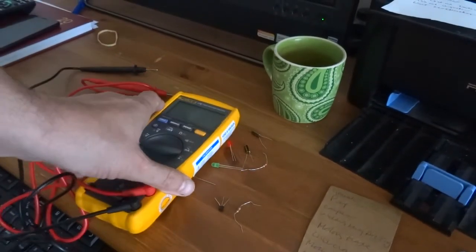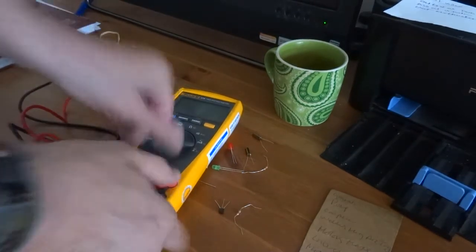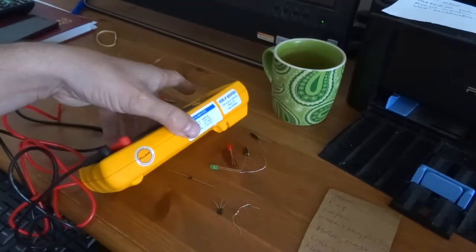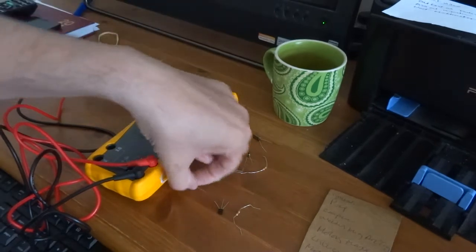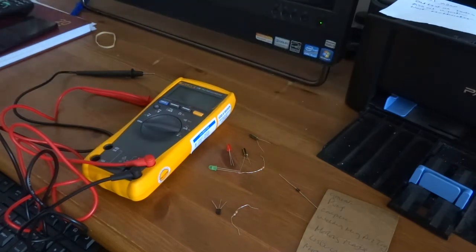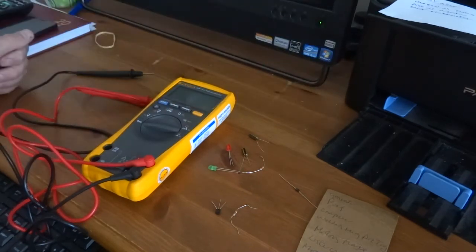Just got in the post, the Fluke 179. It's virtually brand new, still calibrated. I've had a 170 before but it was in much worse condition than this one. This one adds temperature as well, which I need at the minute.